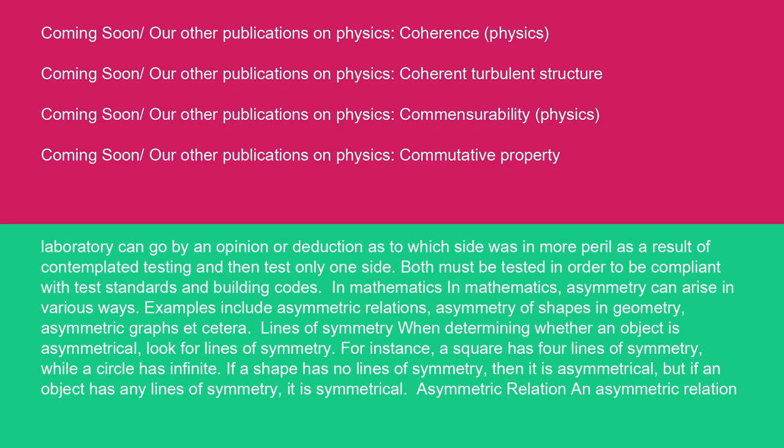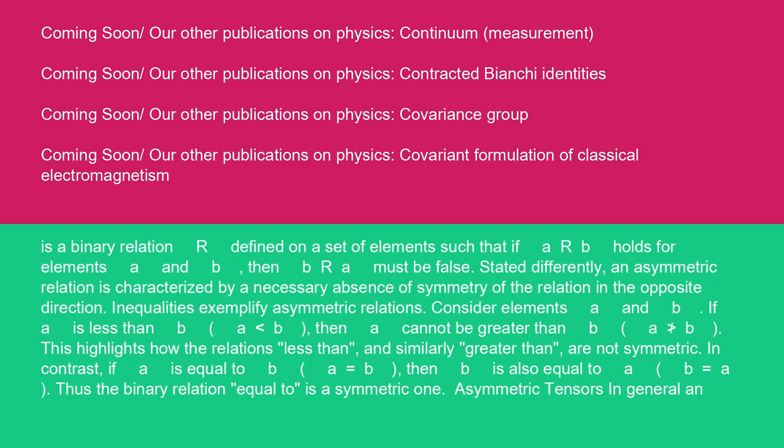Asymmetric relation. An asymmetric relation is a binary relation R defined on a set of elements such that if a R b holds for elements a and b, then b R a must be false. Stated differently, an asymmetric relation is characterized by a necessary absence of symmetry of the relation in the opposite direction. Inequalities exemplify asymmetric relations. Consider elements a and b. If a is less than b (a < b), then a cannot be greater than b (a ≯ b). This highlights how the relations 'less than' and similarly 'greater than' are not symmetric. In contrast, if a is equal to b (a = b), then b is also equal to a (b = a). Thus the binary relation 'equal to' is a symmetric one.